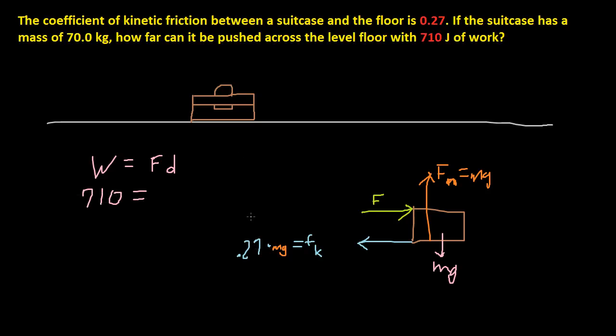So force is 0.27 times mg, which turns out to be 70 times 9.8. So I'm going to use, yeah okay, 9.8. I'll just use 9.8. That's the force times distance.